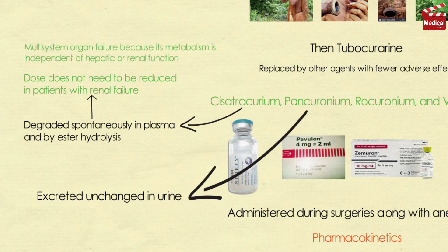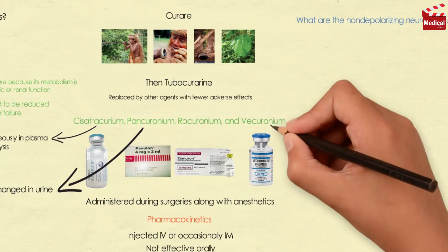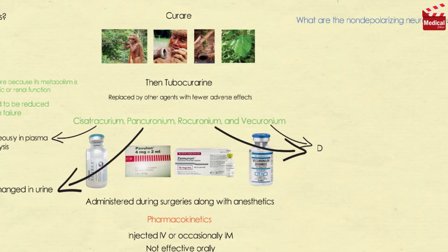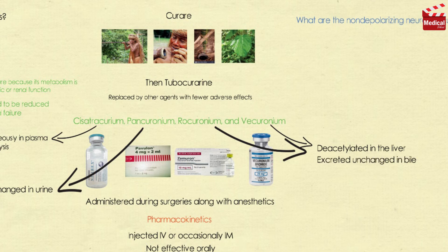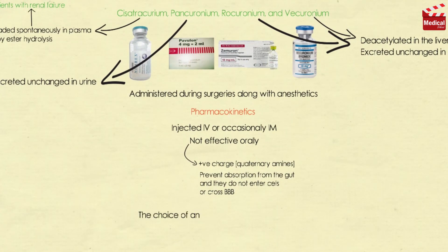The aminosteroid drugs vecuronium and rocuronium are deacetylated in the liver, and their clearance may be prolonged in patients with hepatic disease. These drugs are also excreted unchanged in bile. The choice of an agent depends on the desired onset and duration of muscle relaxation.